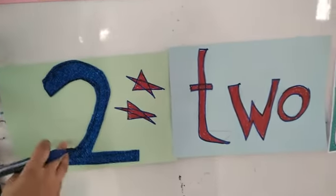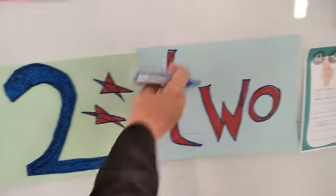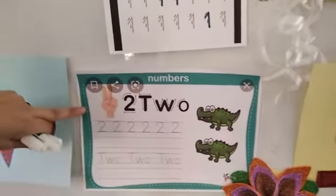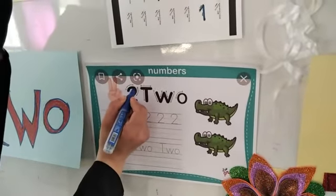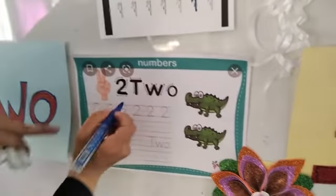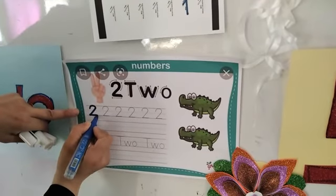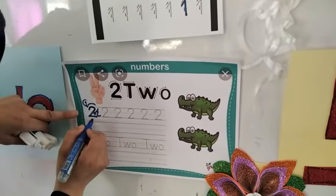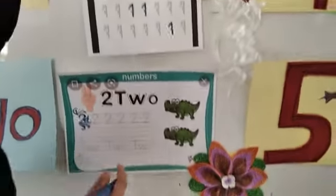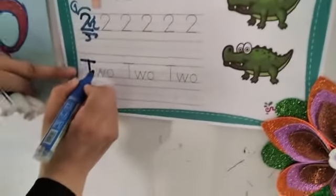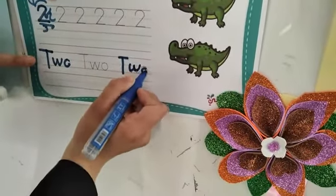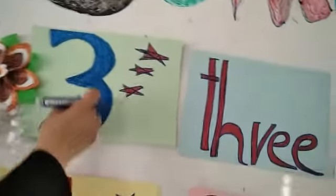We move to number 2. This is number 2 — 1 and 2 stars. This is the word for 2. How do we write number 2? We have 3 steps to write number 2: step 1, step 2, and step 3. We write the word 'two' in this way.